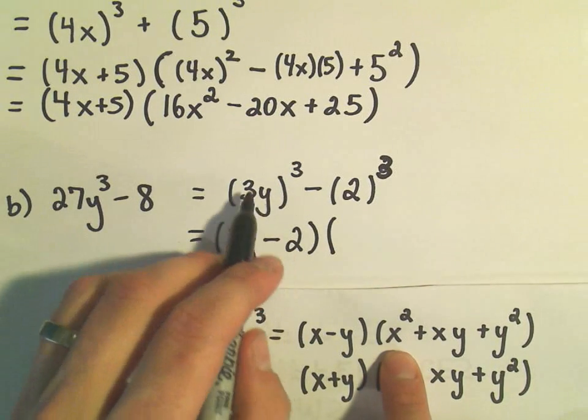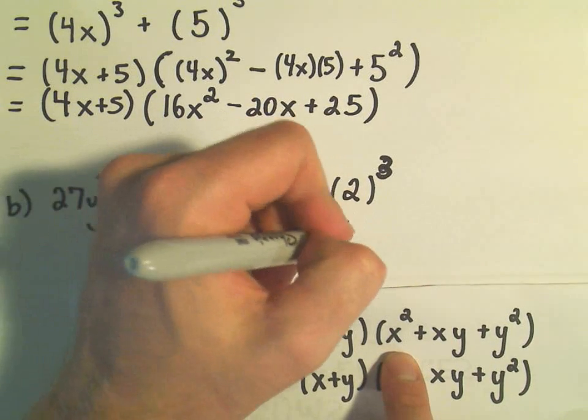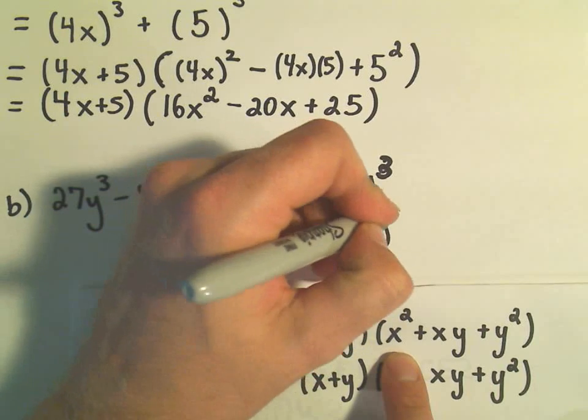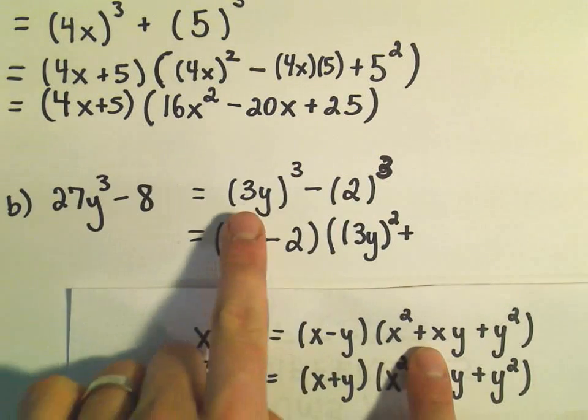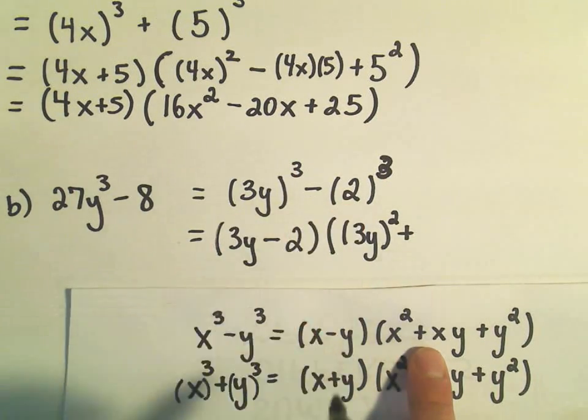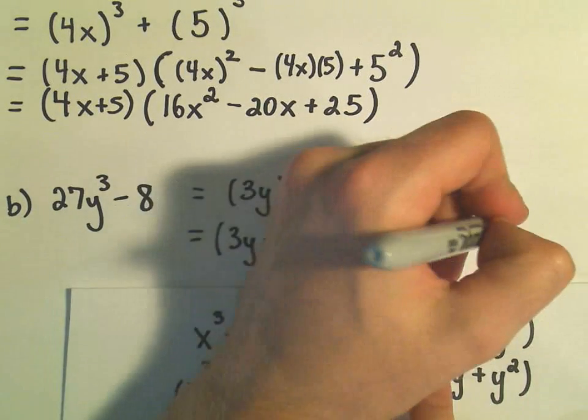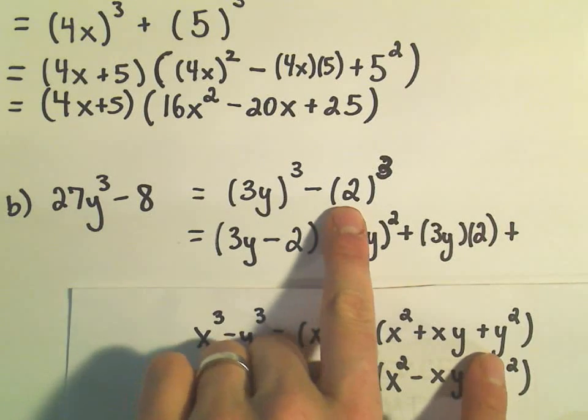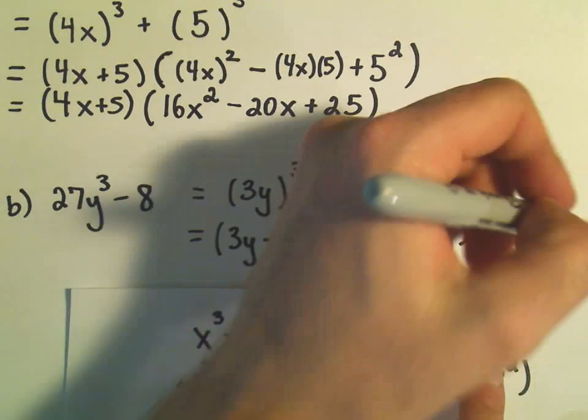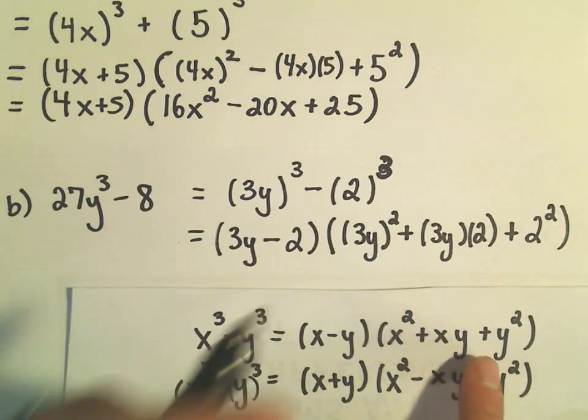And then it says take the first thing in the first set of parentheses and square it. Then write a plus. And now multiply the things inside the parentheses together. So 3y times 2. And then it says whatever number was out there, we just square that as well.